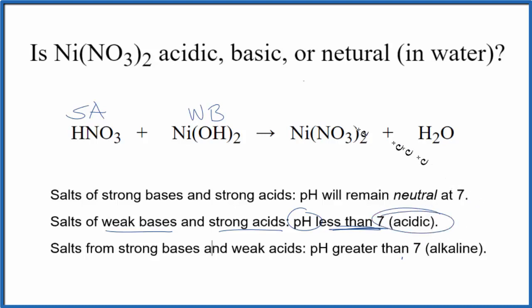So in answer to our question, nickel-2-nitrate, when it's dissolved in water, will form an acidic solution. And we expect the pH to be less than 7. This is Dr. B, and thanks for watching.